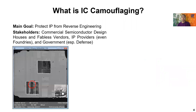So what are IC camouflaging techniques? IC camouflaging techniques protect IP from reverse engineering by disrupting the ability of the attacker to identify logic gates from the images obtained after delayering and imaging. Let's illustrate with an example.